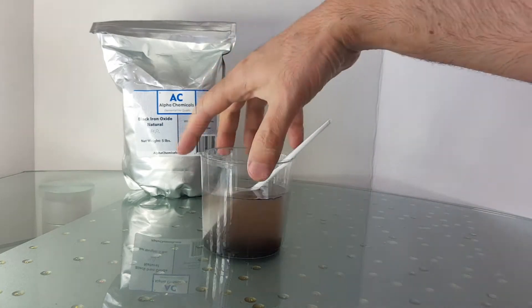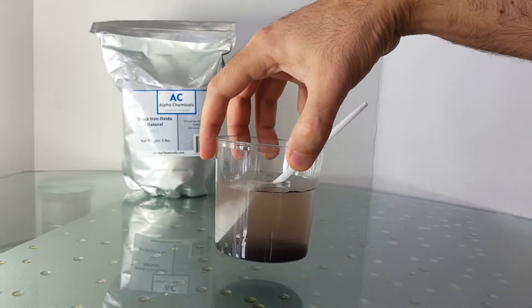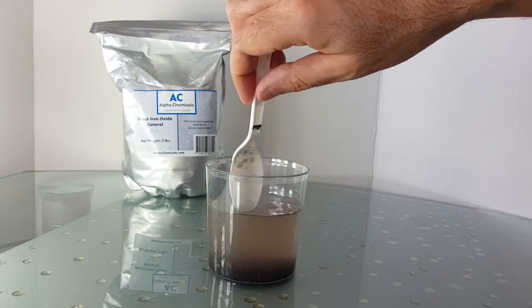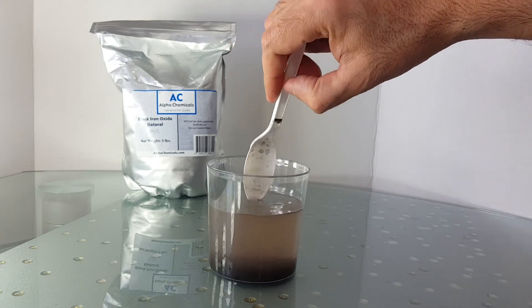Let it sit for a few seconds, and after the powder has sunk to the bottom of the glass, you can see the water looks very muddy. This is what we want to get rid of.